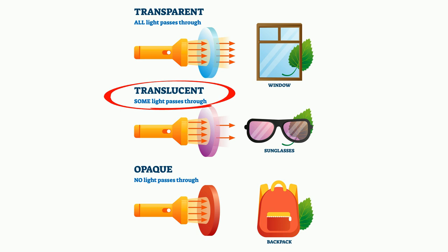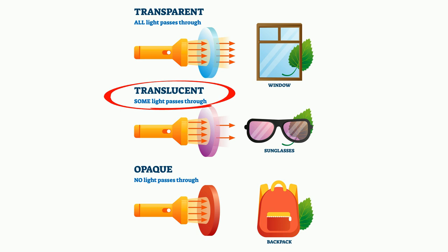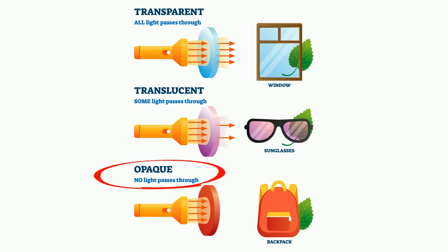Translucent materials allow some light through them, but it is scattered and it is impossible to see a clear image through the material. Opaque materials do not let light through them at all — the light is either reflected or absorbed.